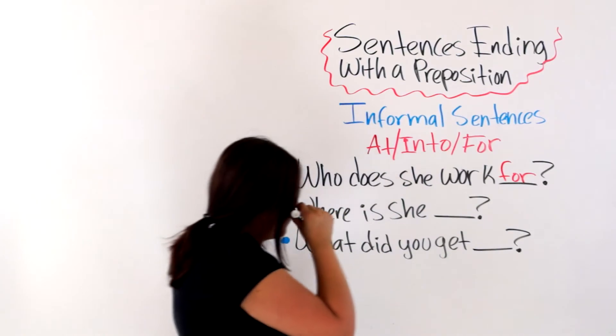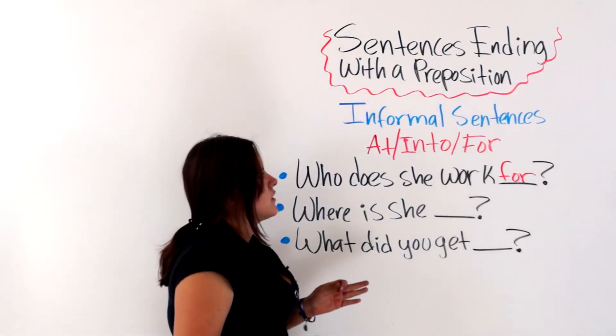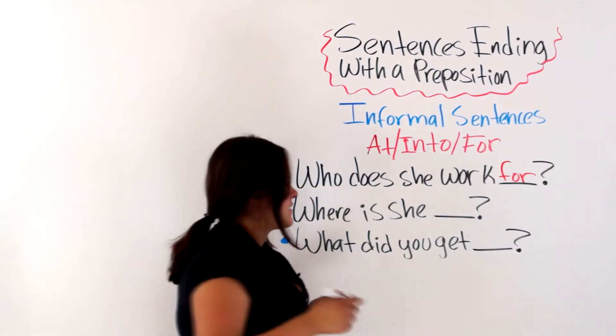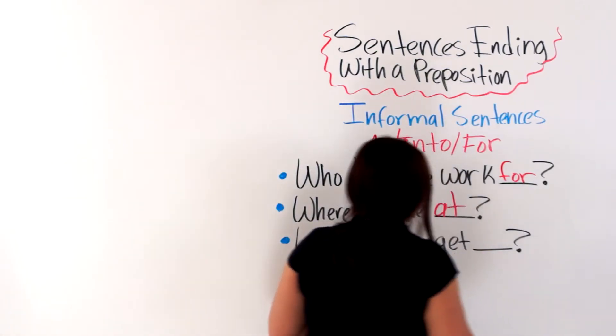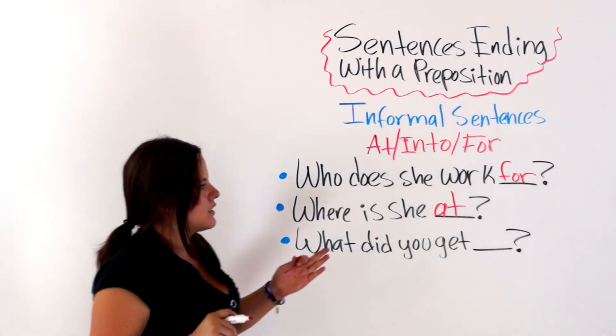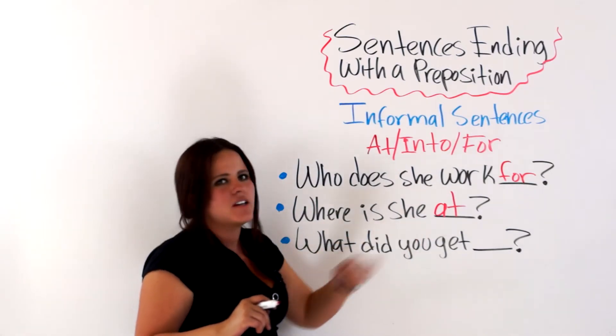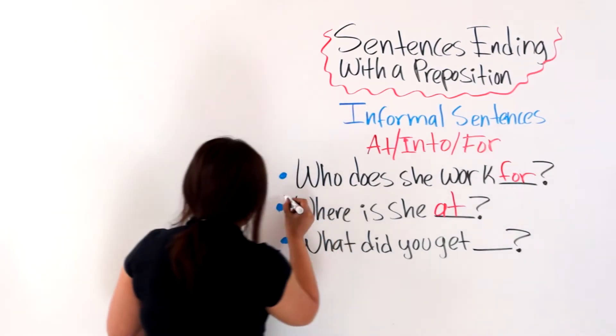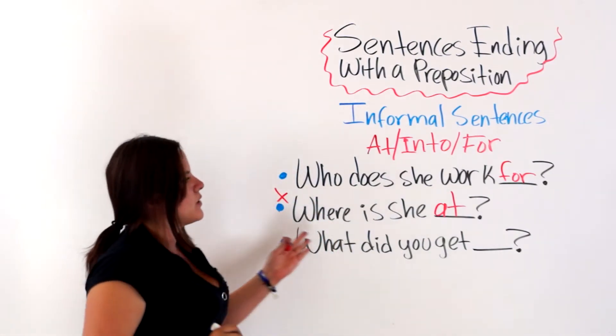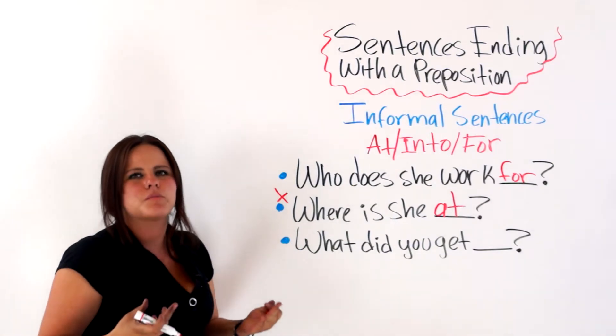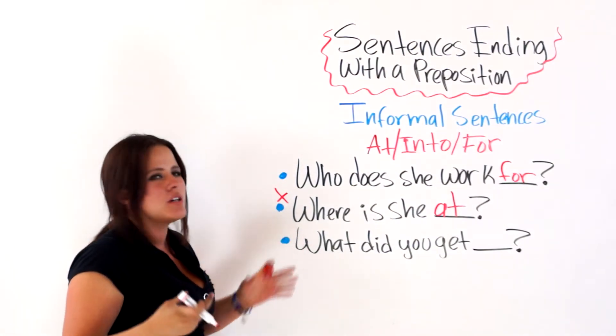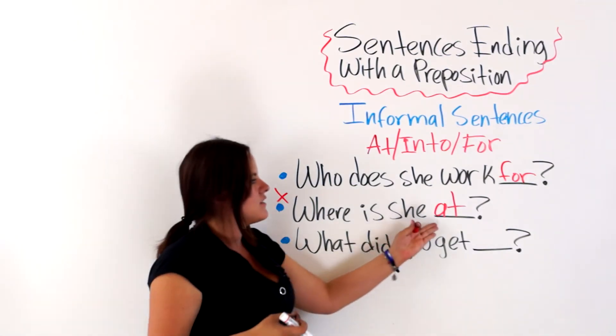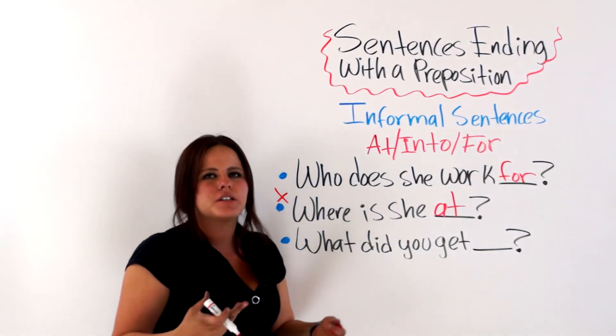The second one says, where is she? Can we say into, for, or at? At. Even though, this is not grammatically correct because it causes a prepositional redundancy. So this is actually a trick sentence. It is wrong. Where is she at? You do not need the preposition at the end. You must only say, where is she? And it is correct. If you add at, you will have a redundant preposition.